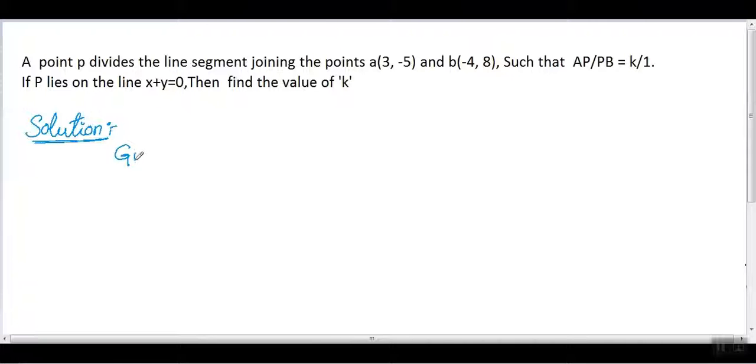Let's write down the given terms. The ratio is k to 1. Comparing the given points A and B, we have x₁ = 3, y₁ = -5 for point A, and x₂ = -4, y₂ = 8 for point B.